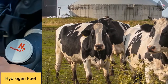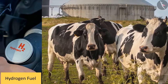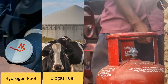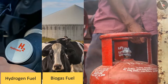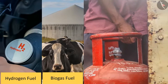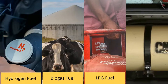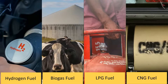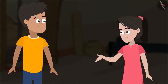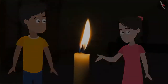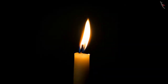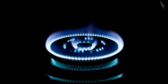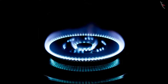Examples of fuels and their calorific values: hydrogen fuel, biogas fuel, LPG fuel, CNG fuel. Now I understand. I have one last question. Did you notice that the candle flame was mostly yellow and red, while the flame produced through LPG is mostly blue? Why is that?